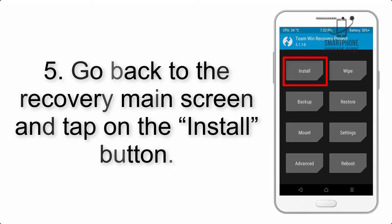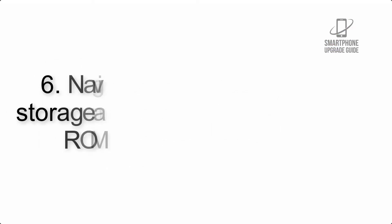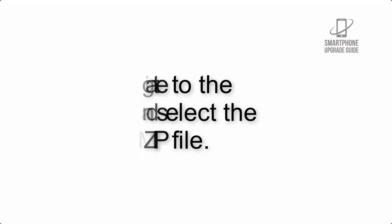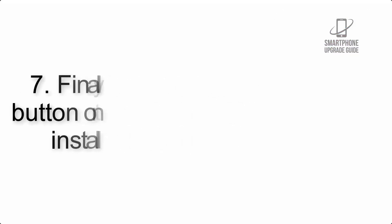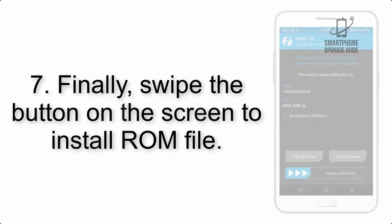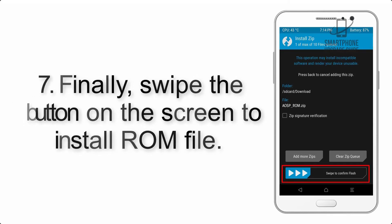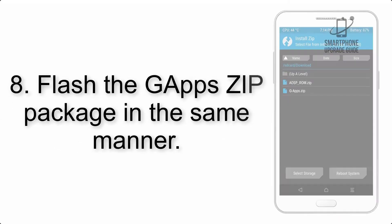Step 5: Go back to the recovery main screen and tap on the Install button. Step 6: Navigate to the storage and select the ROM zip file. Step 7: Finally, swipe the button on the screen to install the ROM file.